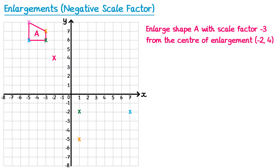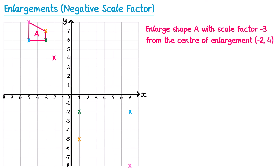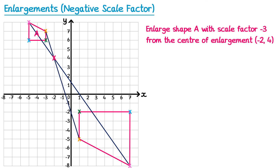For the final pink cross, the journey from the center is 3 left and 4 up, so the reverse is 3 right and 4 down — done 3 times. I connect up those crosses to form the final shape, then verify by connecting matching colored crosses through the center of enlargement. Pink, orange, green, and blue lines all form straight lines, confirming the enlargement is correct.